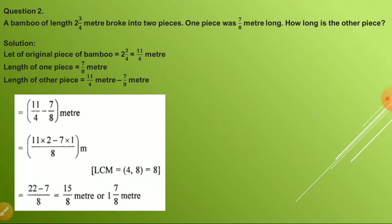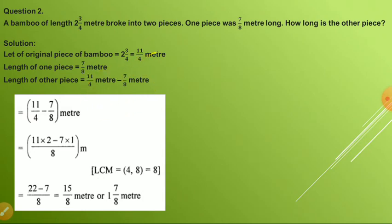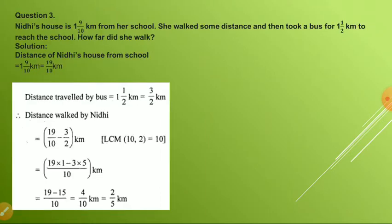Out of 2 whole 3/4 meter bamboo, one piece was 7/8 meter. What is the length of the other piece? You have to subtract: total minus 7/8. The original piece is 2 whole 3/4, which as an improper fraction is 11/4 meters. Length of the other piece will be 11/4 minus 7/8. The LCM of 4 and 8 is 8. By solving this, you will get 15/8, which is 1 whole 7/8 meters.